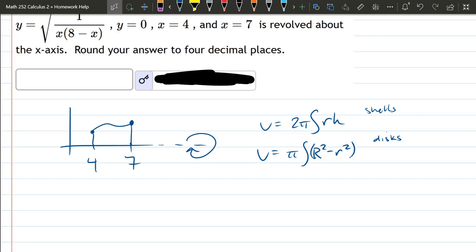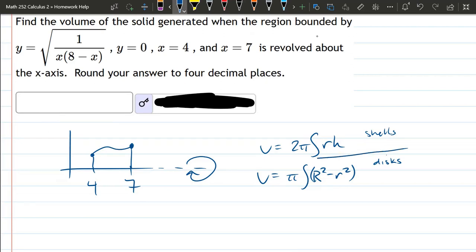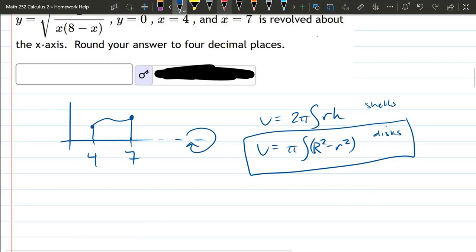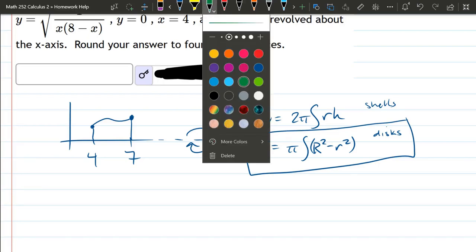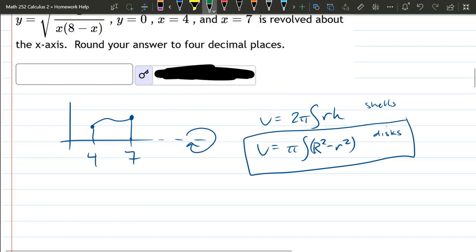We're rotating about the x-axis. So what I'm going to do, I've already said why I'm going to go disks. So what's the cross section look like? I like to draw these in green. Here is a cross section right there. It rotates into a disk. Right there. There is no little r. There is no hollow interior when we rotate this. So little r is going to equal 0.